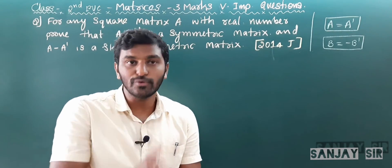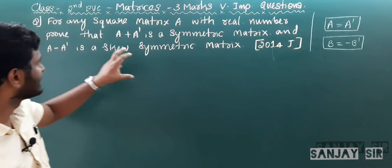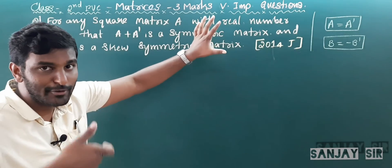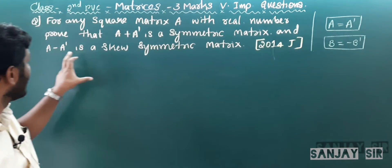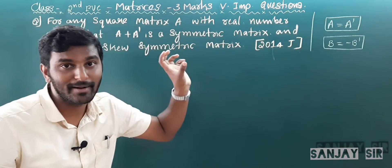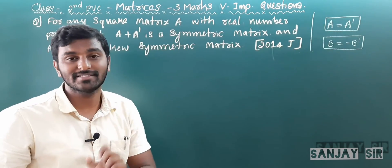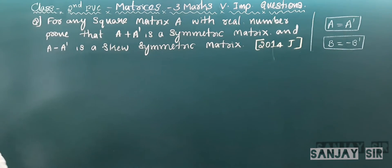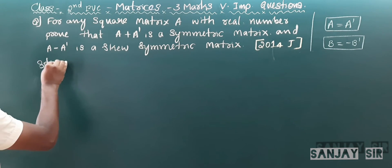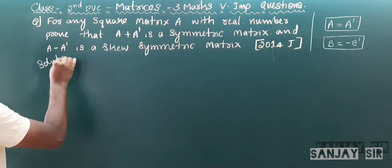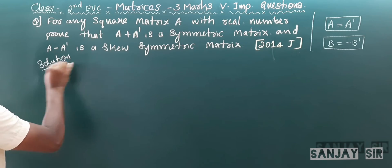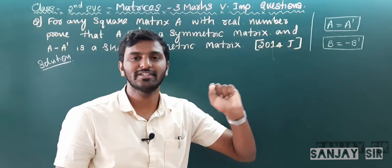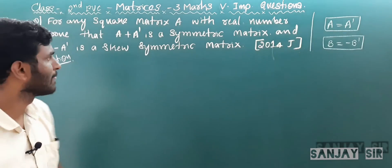How are we going to prove A + A' is a symmetric matrix, and A − A' is a skew-symmetric matrix? This is a very interesting and easy three-marks question. This question was asked in June 2014.